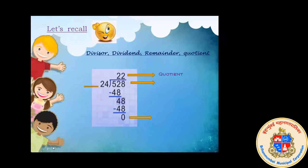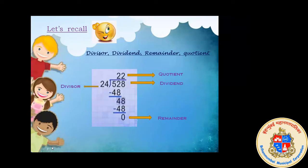Next, what is 528 called? Dividend. Very nice — 528 is the dividend. And zero? Remainder. Very good, Neeraj — zero is our remainder. And what is 24? Divisor. Very good. So these are the words we mostly use in a division sum: quotient, dividend, remainder, and divisor.